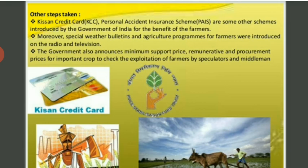Some main schemes include the Kisan Credit Card (KCC) and Accident Insurance Schemes, introduced by the Government of India for the benefit of farmers. In special weather conditions, agriculture programs are announced by radio and television. The government also announces a Minimum Support Price (MSP) for crops to check the exploitation of farmers.